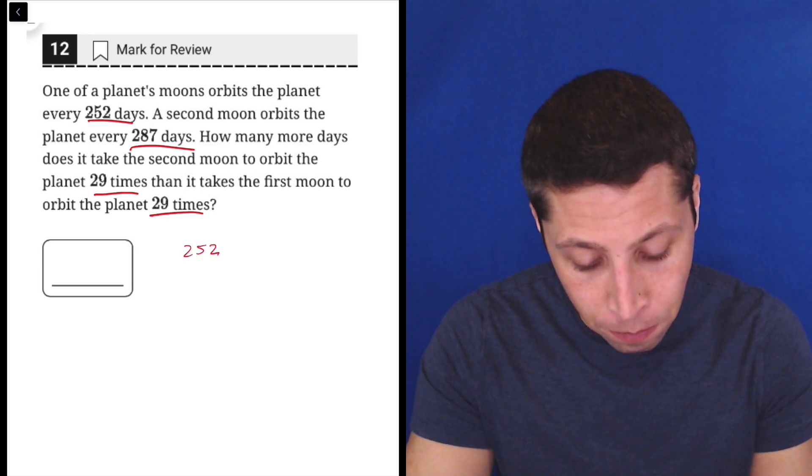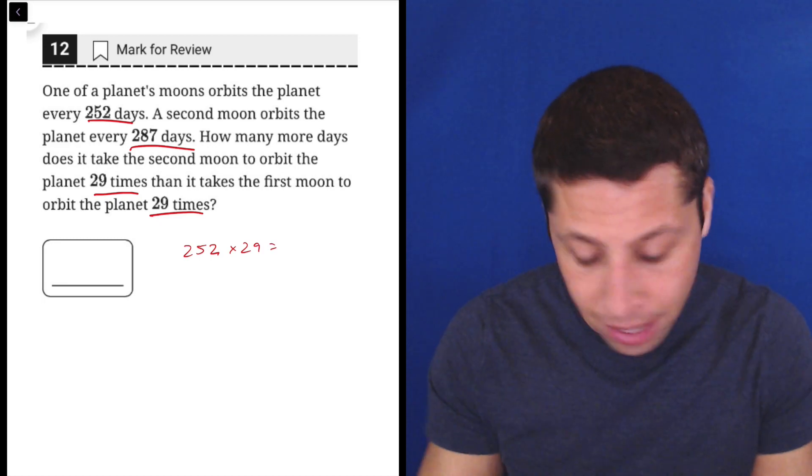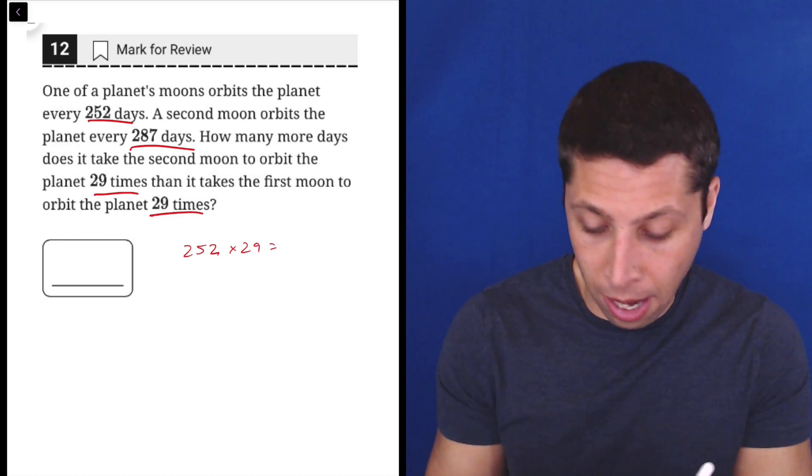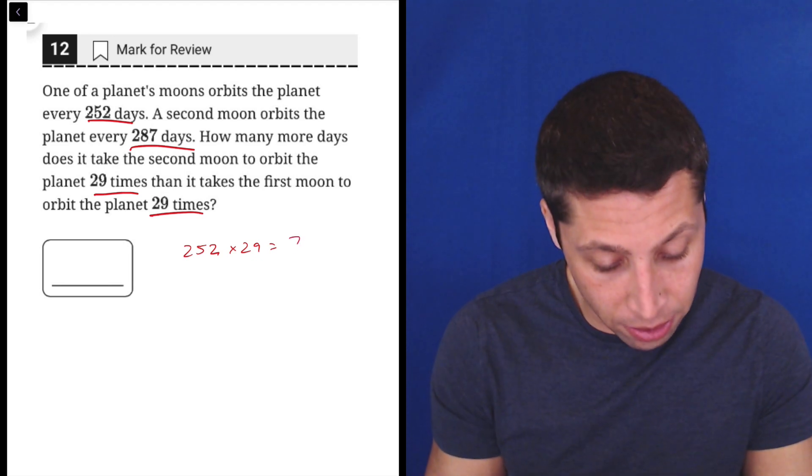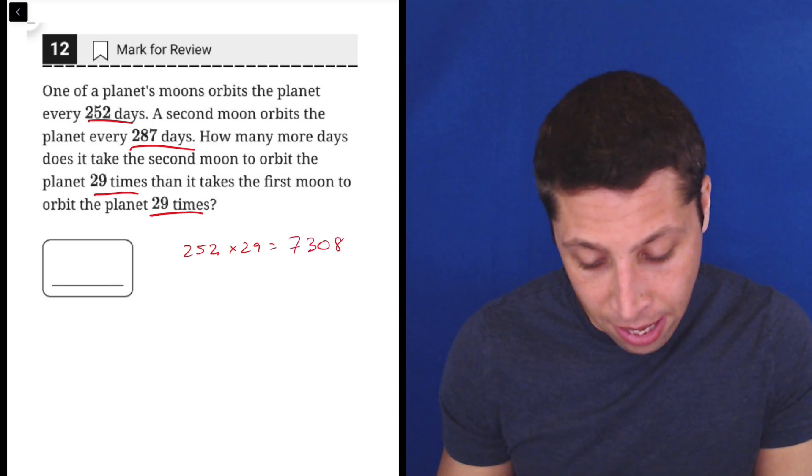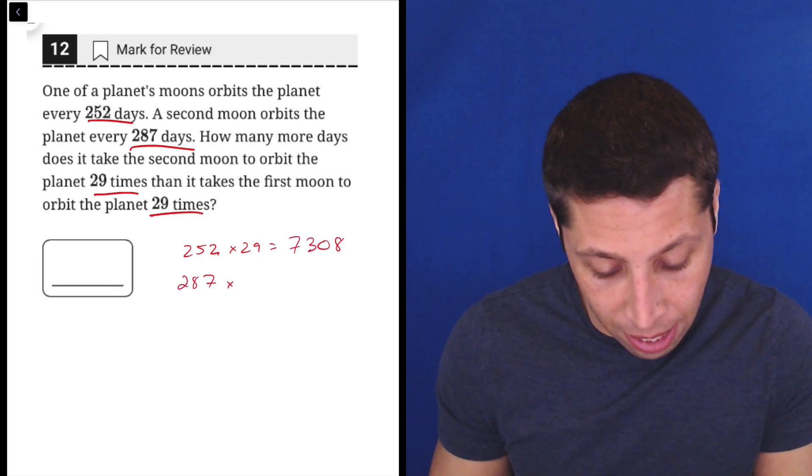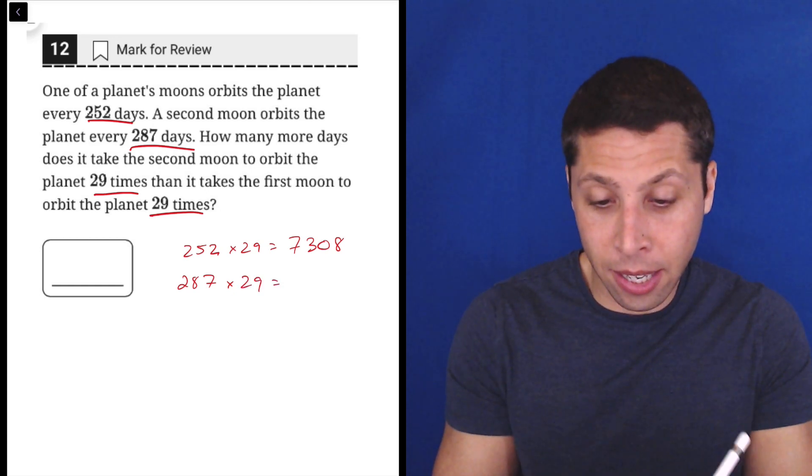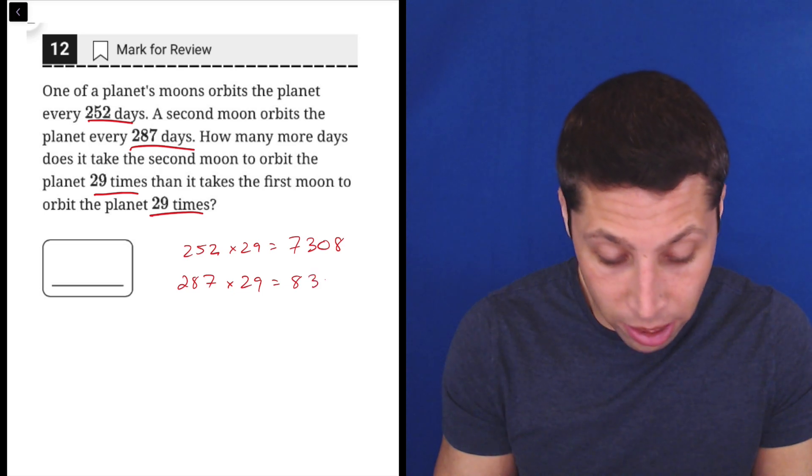So 252 times 29—get your normal calculator here—252 times 29 is 7,308. 287 times 29, the other moon, 287 times 29 is 8,323.